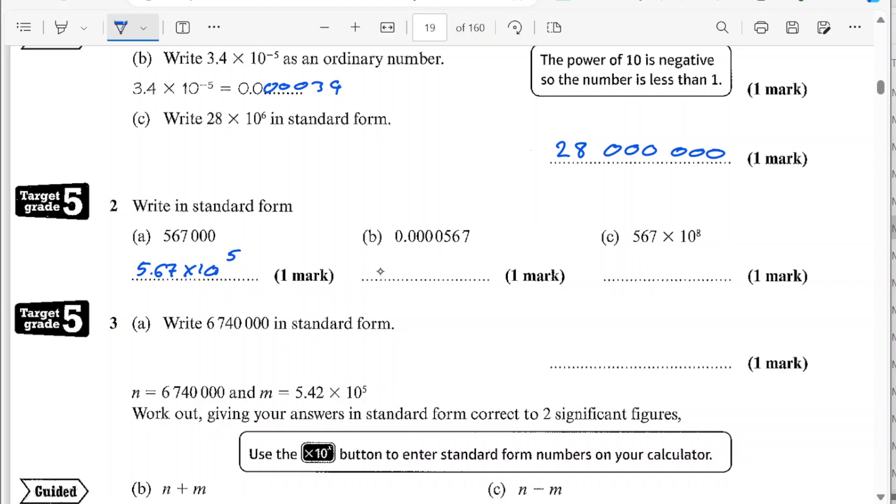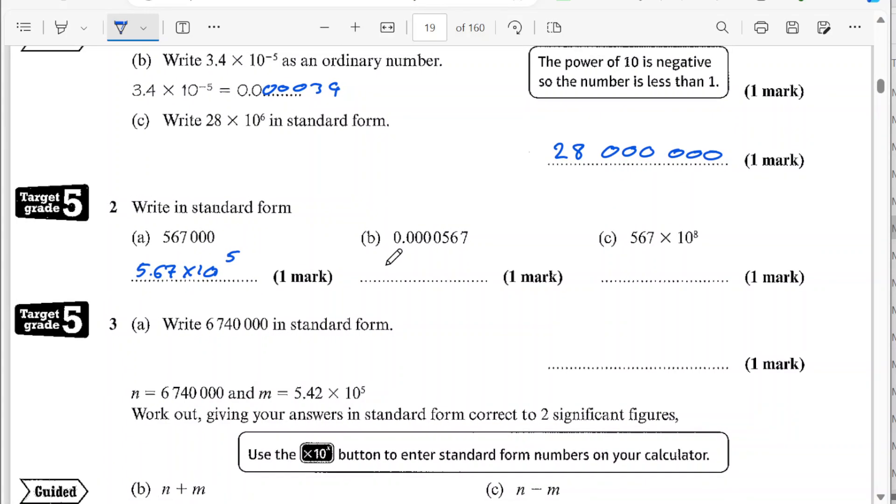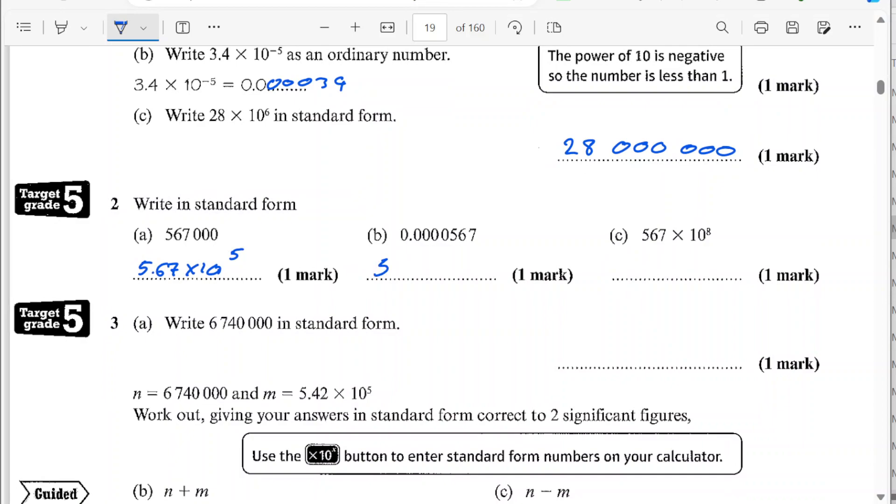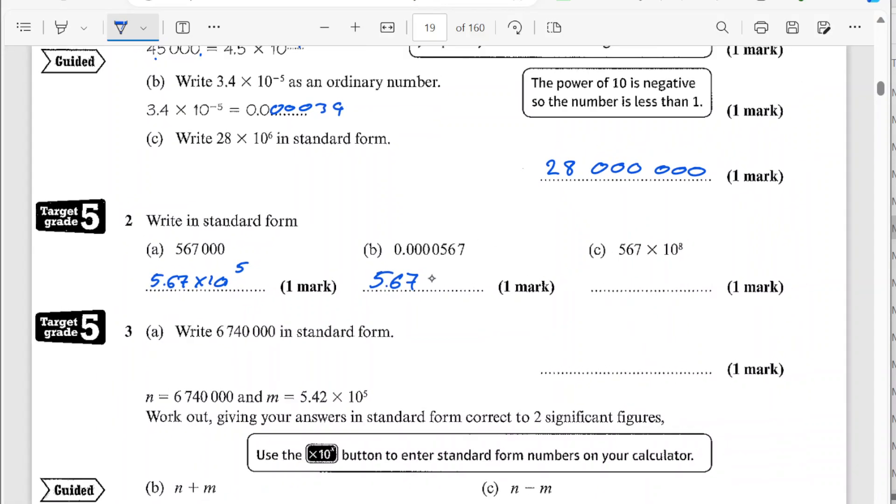For this one, likewise, I'm going to 5.67 and I've moved the decimal point to there. So I can count the zeros. 1, 2, 3, 4, 5 zeros. So it's going to be times 10 to the minus 5.